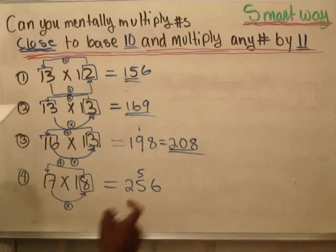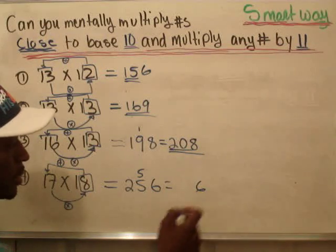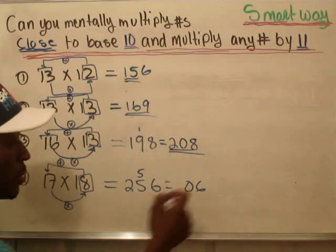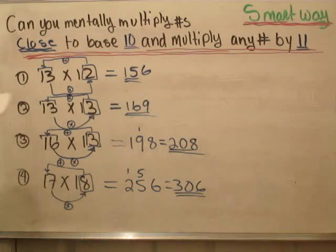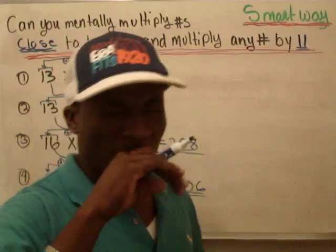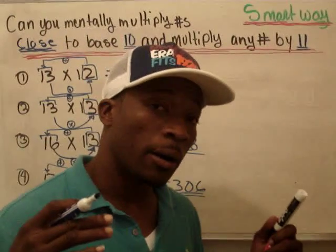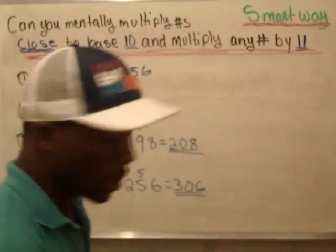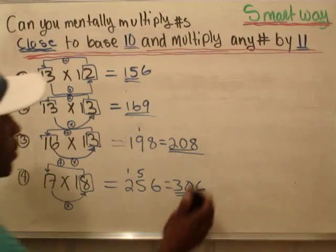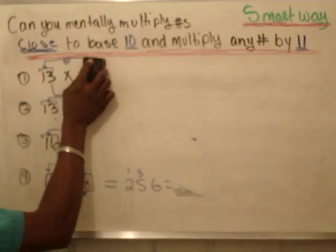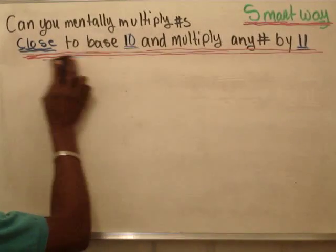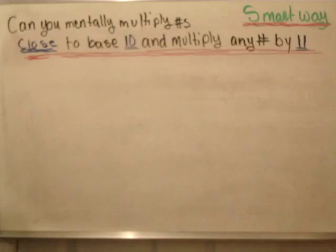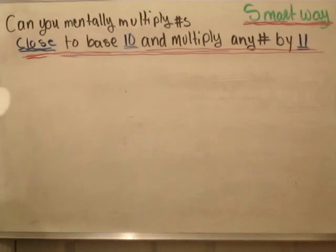And that's your answer. The final answer will be 6, carry the 5 — 5 and 5 gives you 0, carry the 1 over — it's going to give you 306. And that's your answer for mentally multiplying numbers that are close to base 10. Now we're going to go to the next set of problems, and that's going to be multiplying any number by 11. The more you practice, the easier it will be to mentally multiply those numbers without any problem.